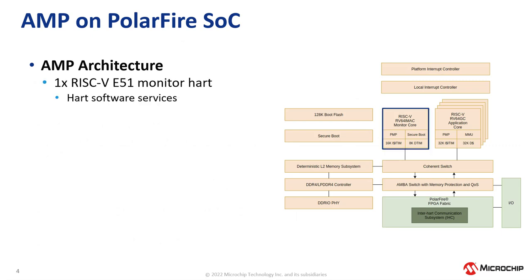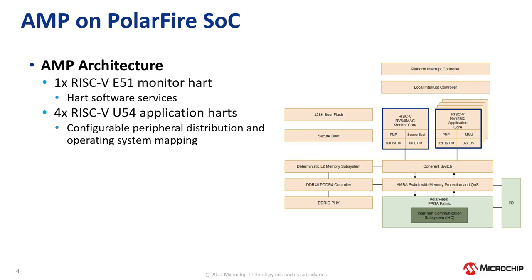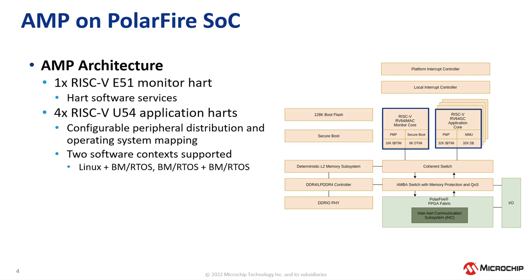There's one RISC-V E51 monitor core dedicated to run the Hart Software Services, also known as the HSS. There are also four RISC-V U54 application cores. We can distribute peripherals and map different operating systems among these cores.